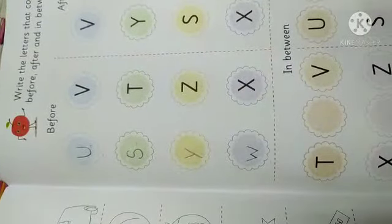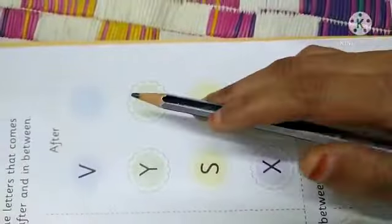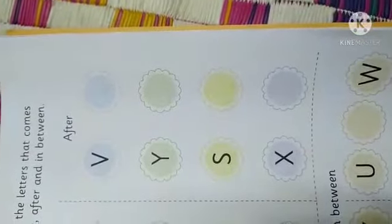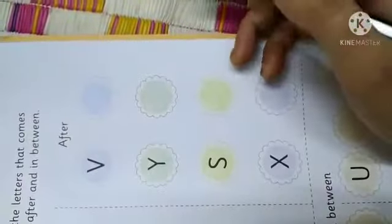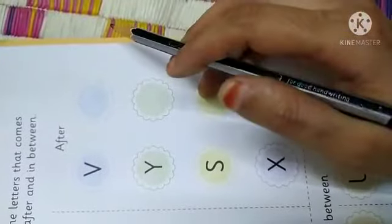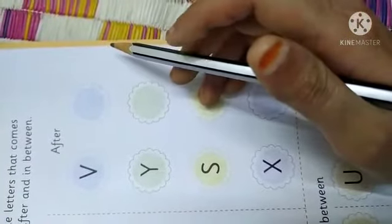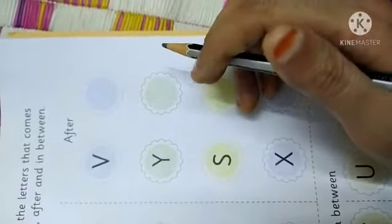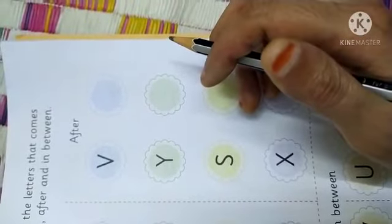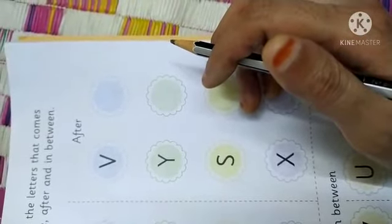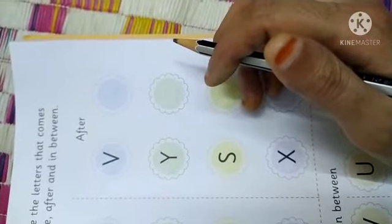Now we are moving to our next topic is after. What will come after? After means baad mein. V. See here, which letter is this? V. V ke baad ke aata hai? What will come after V? Let's see. So, we will revise.